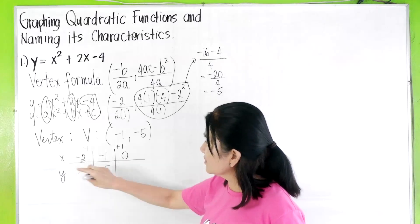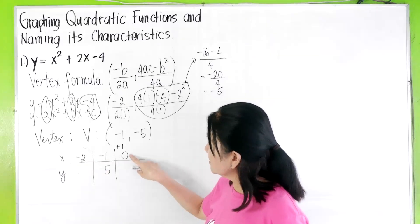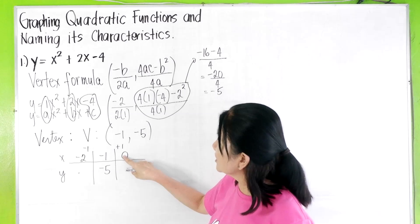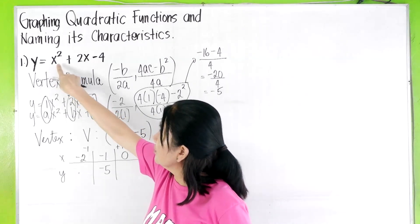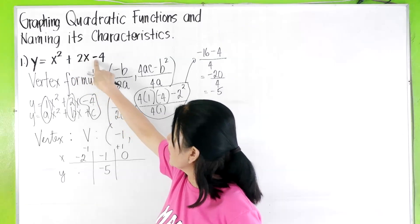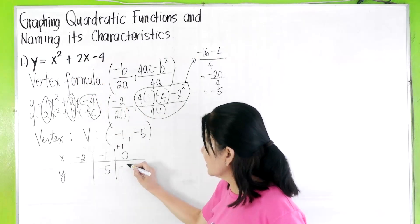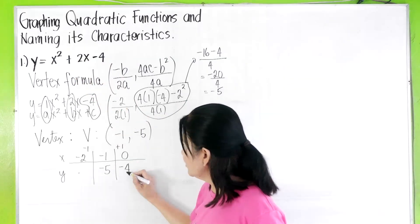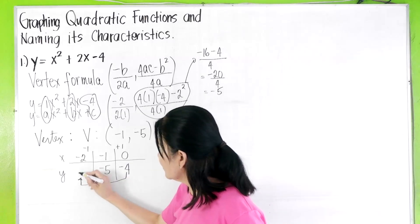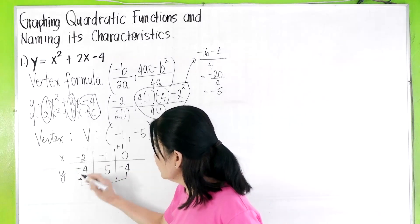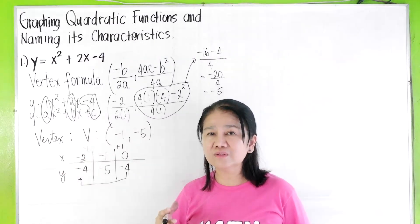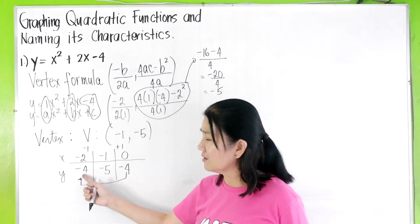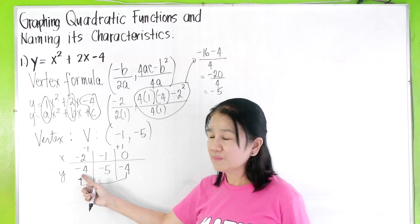Since it is symmetrical to the right and to the left, whatever is the value of y that you get here, it's the same value of y that you will be getting here. So, let's substitute the value of x, which is 0, in the original equation. 0² is 0 + 2(0) - 4. So, this is -4. Actually, you can automatically write -4 here. As I told you, a parabola is symmetrical to the right and to the left, so it will have the same values of y here.